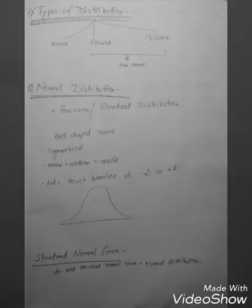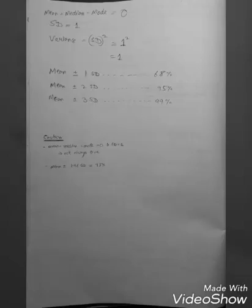What is normal distribution? Normal distribution is also called Gaussian or standard deviation. The curve we can see. The curve is bell-shaped. It is symmetrical and mean equal to median equal to mode. And the two tails on each side, they touch infinity and never touch the baseline. So in a standard normal curve, mean equal to median equal to mode equal to 0. Standard deviation is equal to 1. Variance equal to standard deviation square equal to 1.